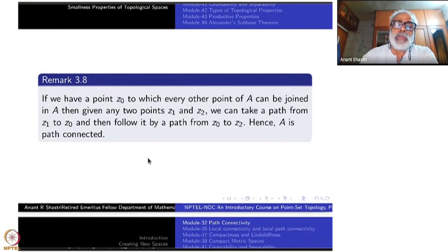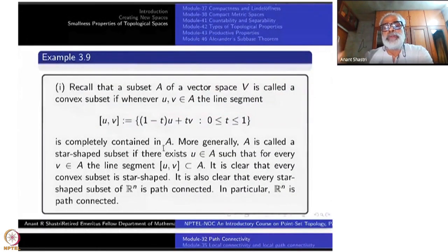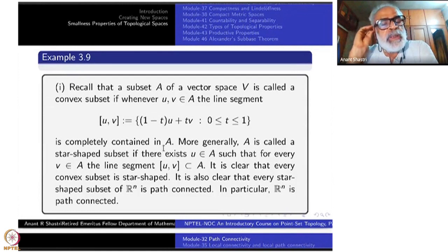Look at union of x-axis and y-axis. The origin can be joined to every point in the union of x-axis and y-axis. So that is the kind of situation I am in mind here. The same thing can be done in any vector space V.